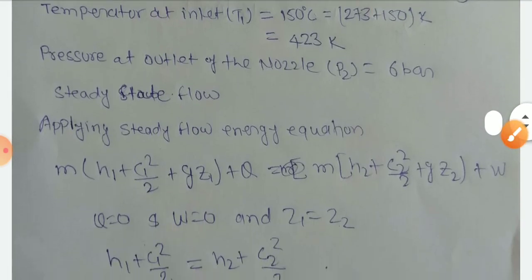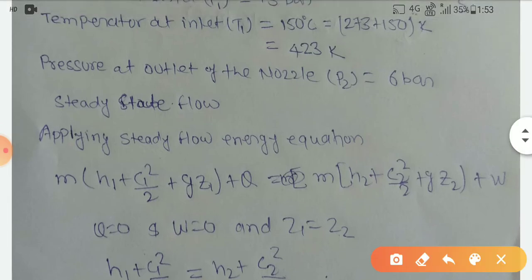So Z1 equals Z2. From applying steady flow energy equation, the process is adiabatic, so Q is zero and there's no work transfer. I can assume W is zero and Z1 equals Z2.